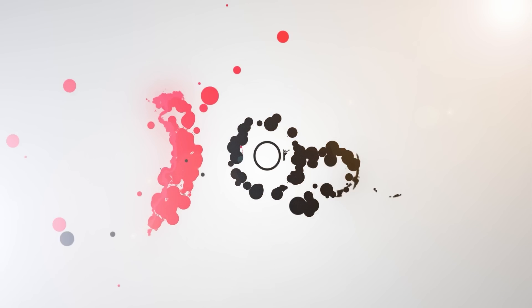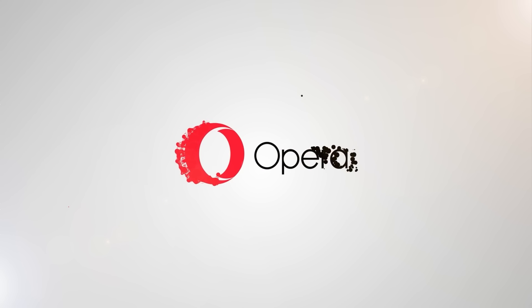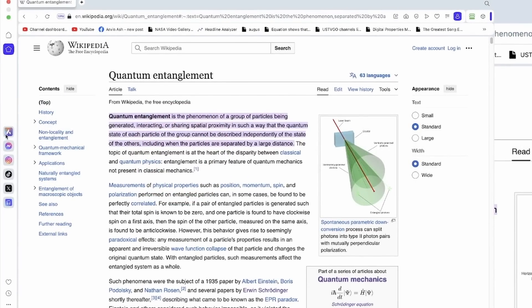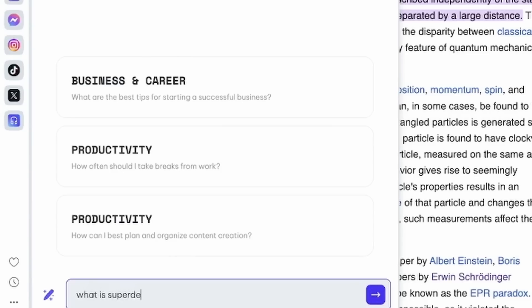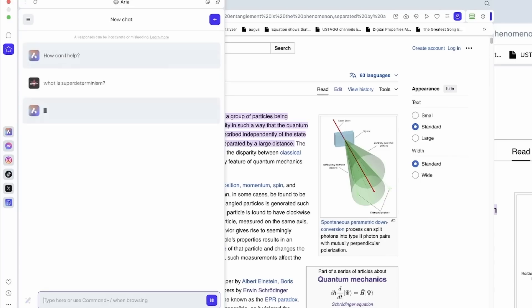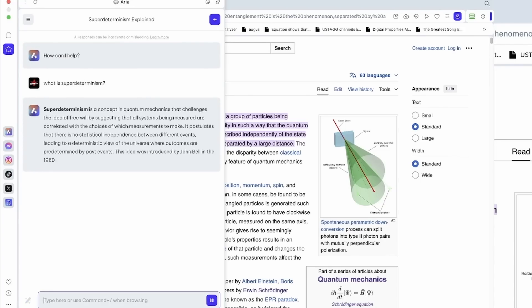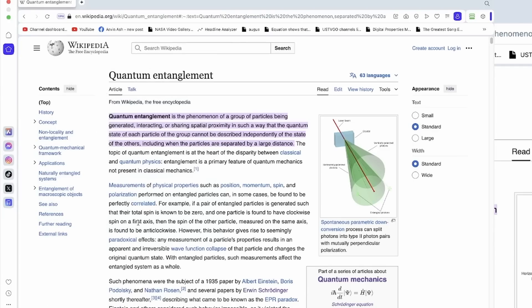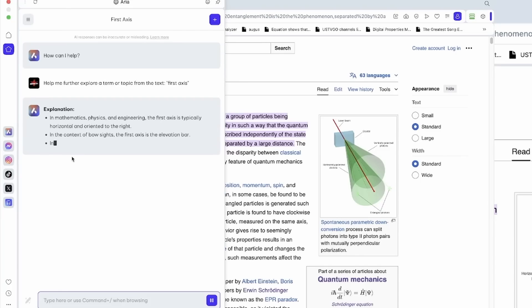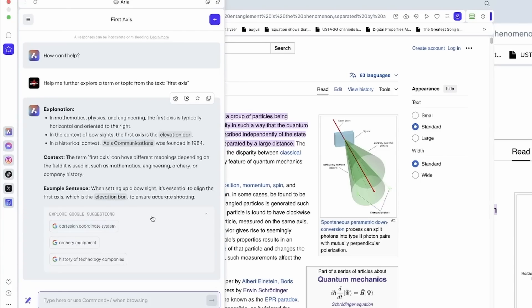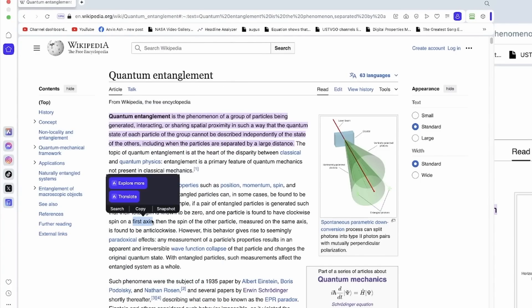Before I tell you what quantum mechanics really says, I want to tell you about a great new browser I've started using recently that saves me tons of time and hassle, and I think it can do the same for you. It's called Opera. And here's what's unique about it. First, it has a built-in free browser AI feature called Aria, which can answer questions directly in the Opera sidebar. So for example, if I want the AI answer to a question I might be researching like, what is super determinism? It immediately gives me something to work with right there, without having to go to other websites. And the turbocharged time saver is that if I highlight anything on a webpage, Opera gives me the option of getting more info on it from the AI, or immediately do a search on a new tab, or even translate it in another language. This is useful and unique.